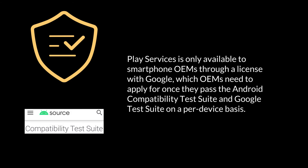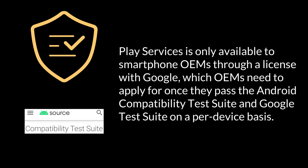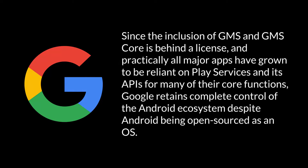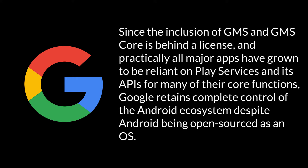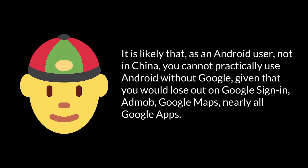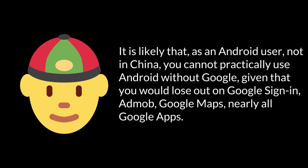Play Services is only available to smartphone OEMs through a license with Google, which OEMs need to apply for once they pass the Google Compatibility Test Suite and Google Test Suite on a per-device basis. Since the inclusion of GMS and GMS Core is behind a license, and practically all major apps have grown reliant on Play Services and its APIs for many of their core functions, Google retains complete control of the Android ecosystem despite Android being open-source as an OS. It is likely that as an Android user, not in China, you cannot practically use Android without Google — given that you would lose out on Google Sign-In, AdMob, Google Maps, and nearly all Google apps.